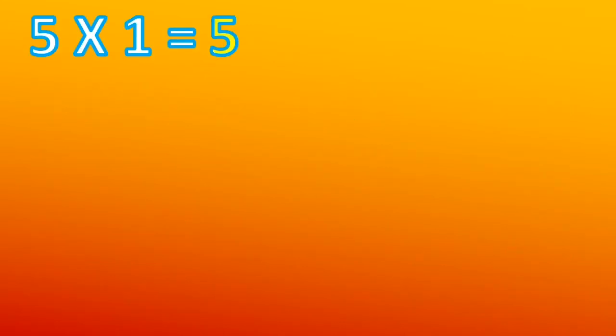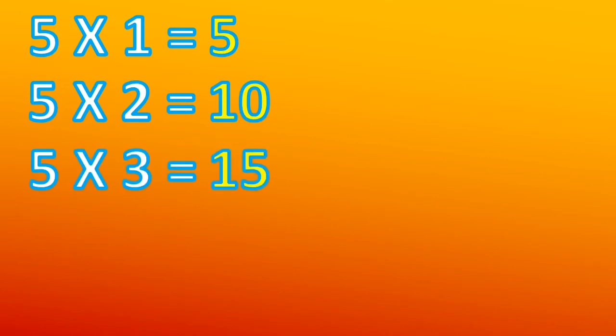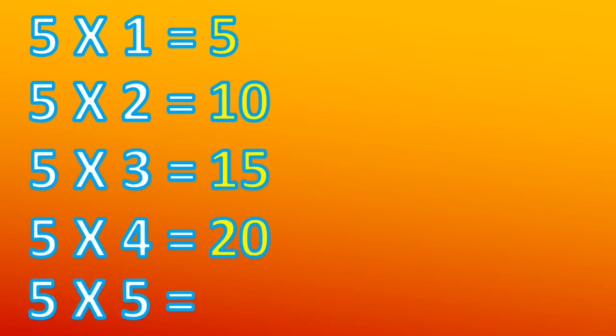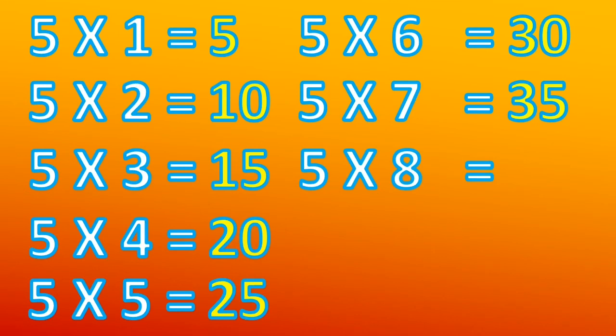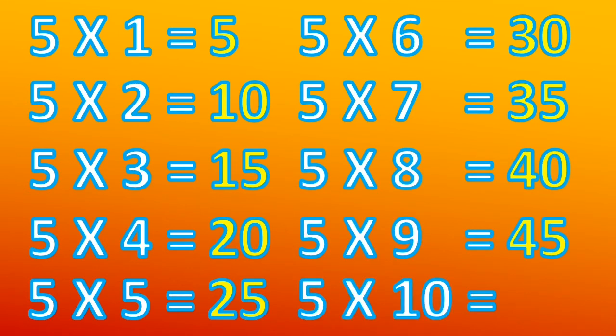Five ones are five, five twos are ten, five threes are fifteen, five fours are twenty, five fives are twenty-five, five sixes are thirty, five sevens are thirty-five, five eights are forty, five nines are forty-five, five tens are fifty.